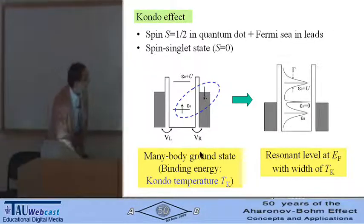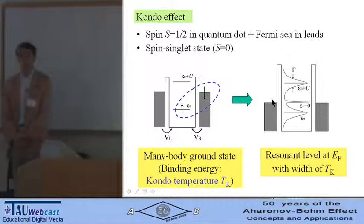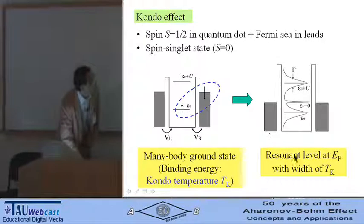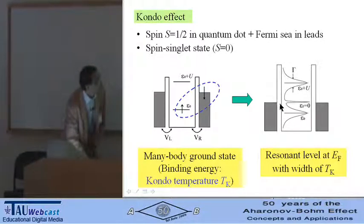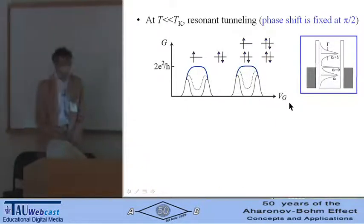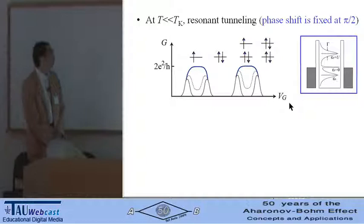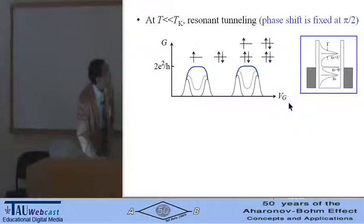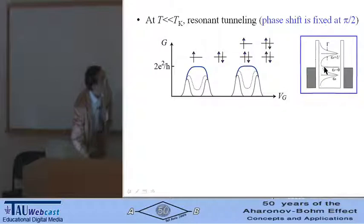This many-body ground state makes the resonant level at the Fermi level, and width of the resonance is given by the Kondo temperature. As a result, at low temperatures much lower than Tk, resonant tunneling takes place through the Kondo resonance. The conductance goes to 2e squared over h.